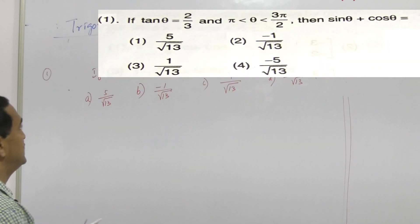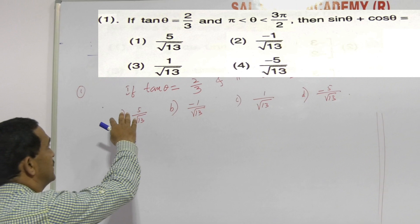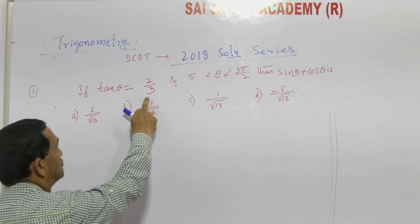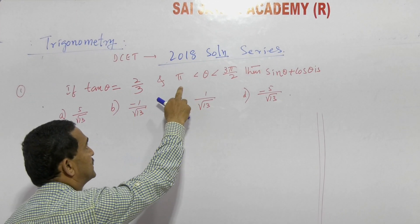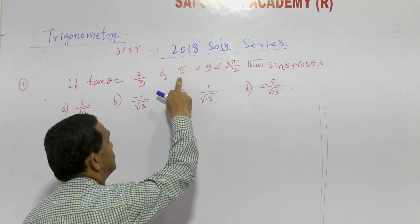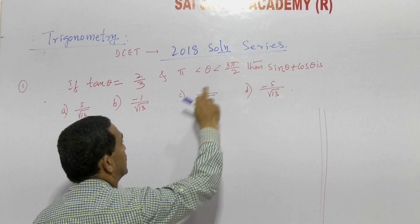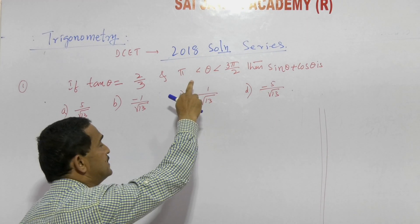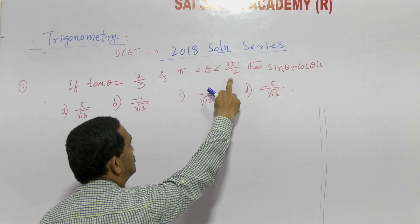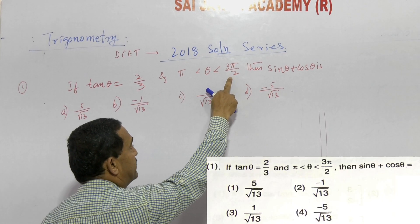The first question in trigonometry: if tan theta is equal to 2/3 and he has given that the angle should lie between π and 3π/2. As we know, π equals 180 degrees.